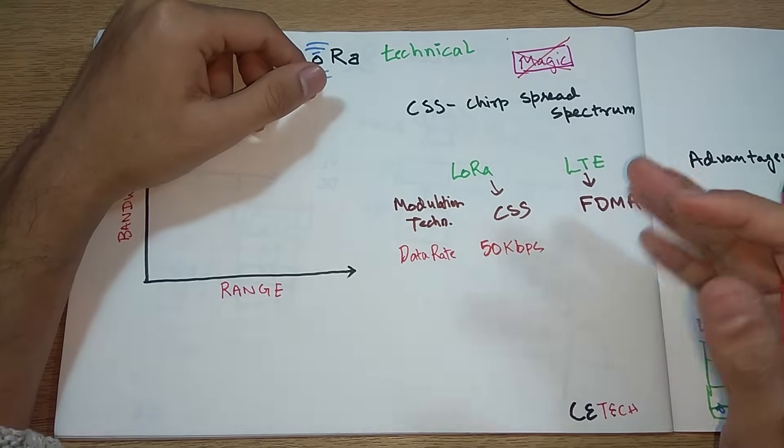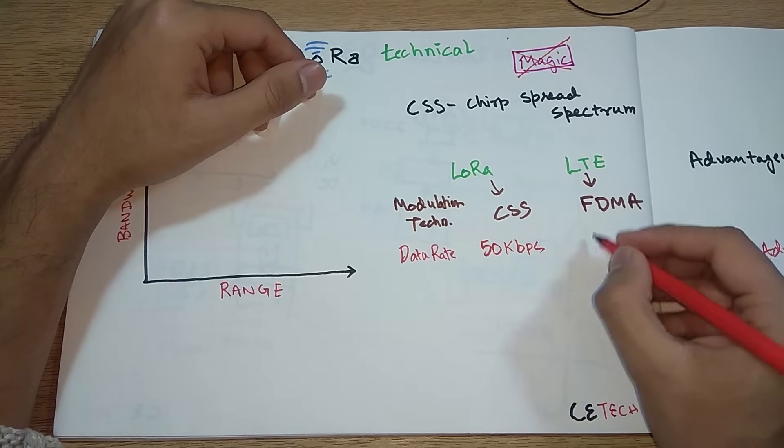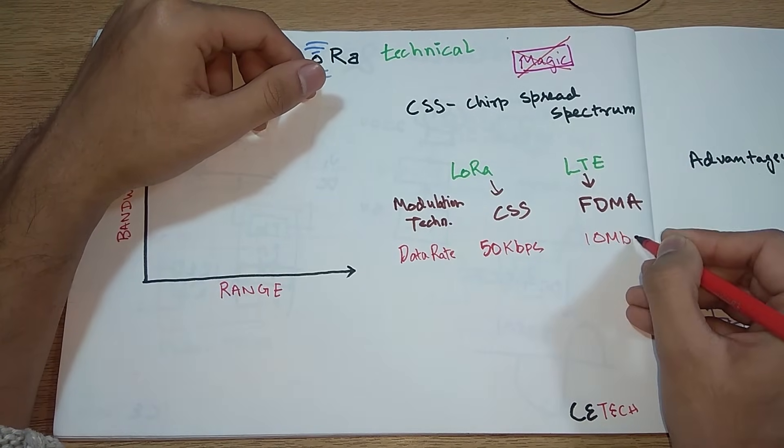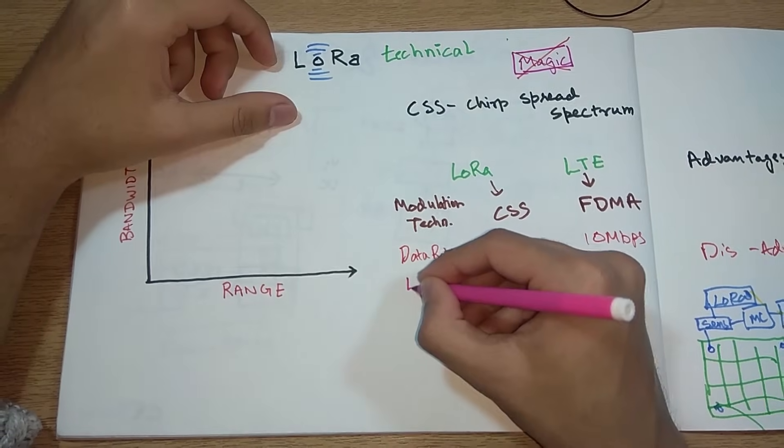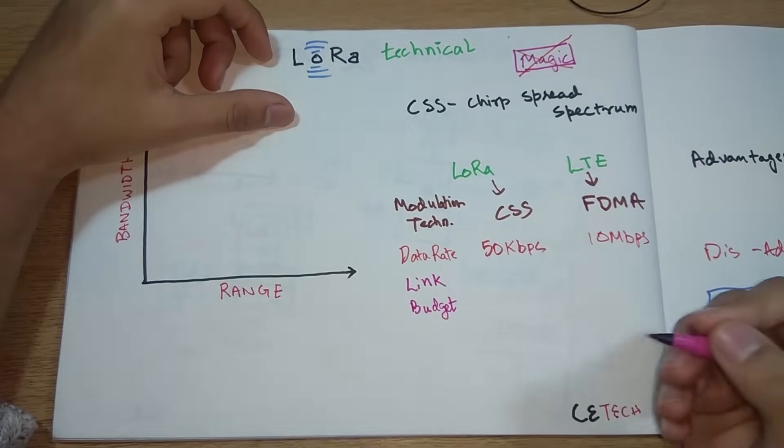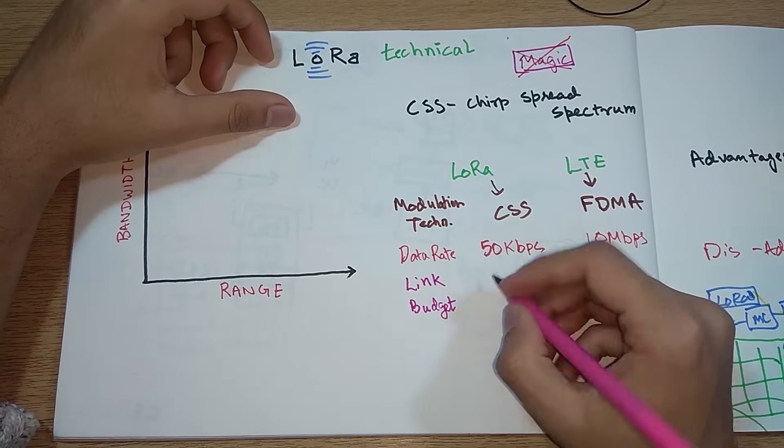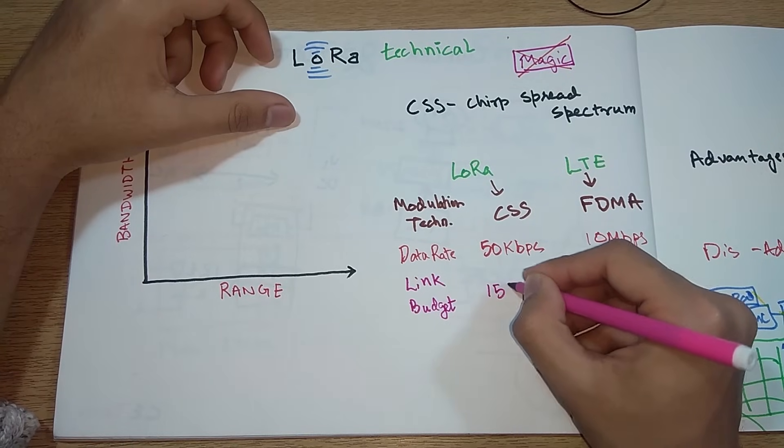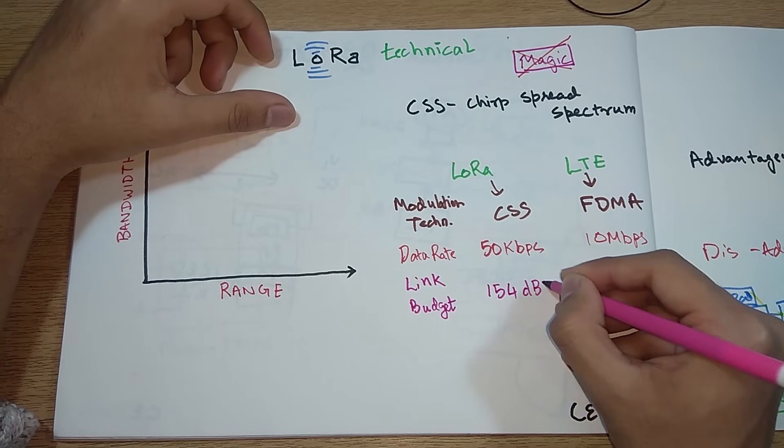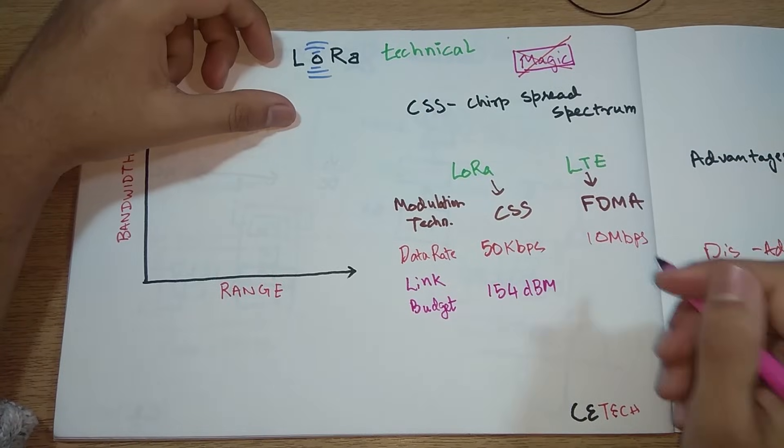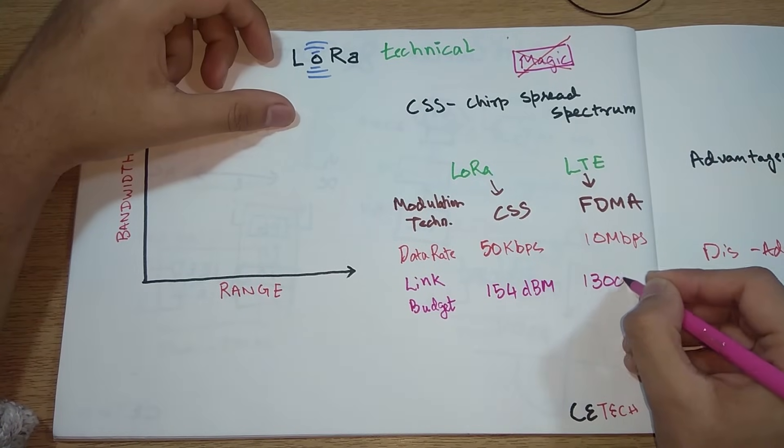The second thing we'll see is data rate. The maximum data rate we can achieve with LoRa is 50 kilobits per second, while LTE is much faster, you can stream videos with 10 mbps. One technical term is link budget. Link budget for LoRa is around 154 dBm while link budget for LTE is around 130 dBm.